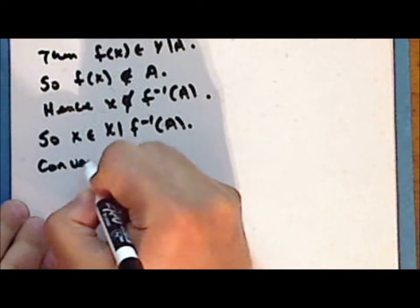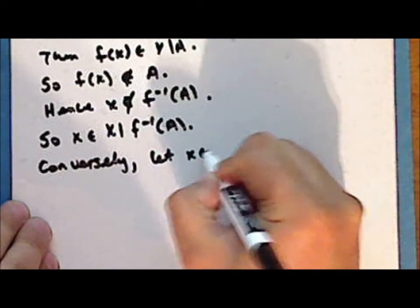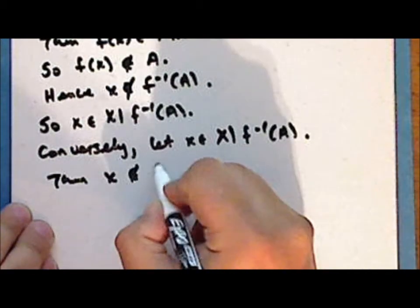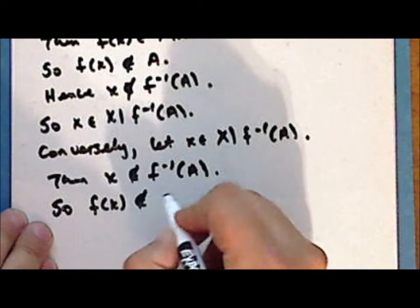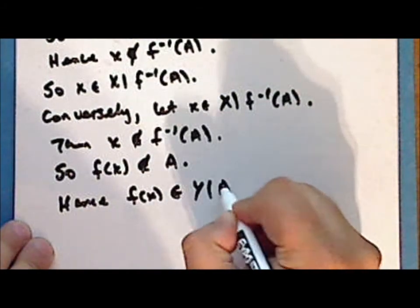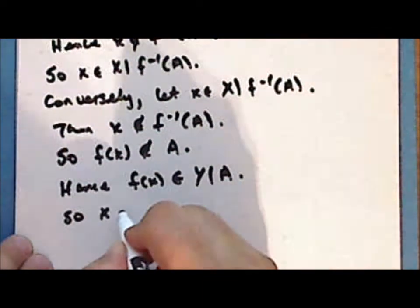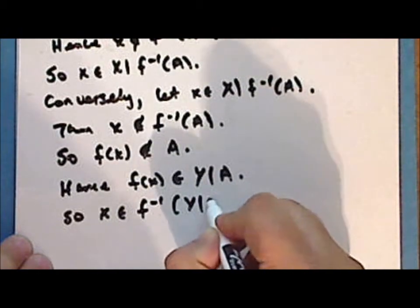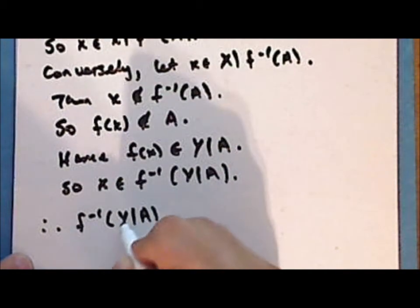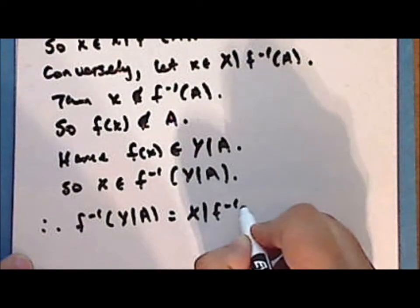Conversely, let x be a point in the complement of the inverse image of a in x. Then this point x is not in the inverse image of the set a, and hence f of x is in the complement of a in y. And so the point x is in the inverse image of the complement of a in y. So we have demonstrated set inclusion in both directions. Therefore, the inverse image of the complement of a in y is equal to the complement of the inverse image of a in x.